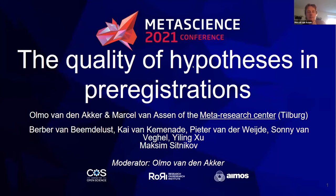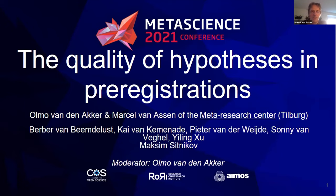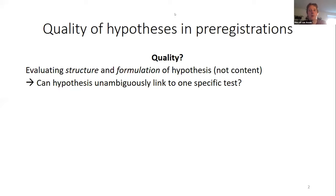My talk is on the quality of hypotheses in pre-registrations. Olmo and I led this research — we are both from the Meta Research Center — and five first-year psychology students did this research with us, along with Maxim Sidnikov, a research master student. What do I mean by quality of hypotheses? I mean the structure and formulation of hypotheses, not the content. Loosely speaking, it is: if you see a hypothesis, can you link it to one specific test?